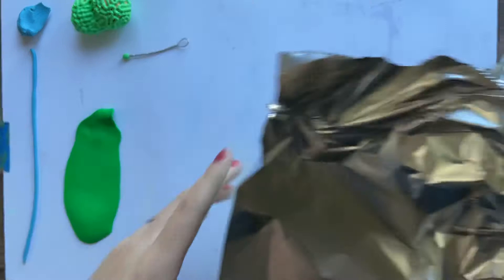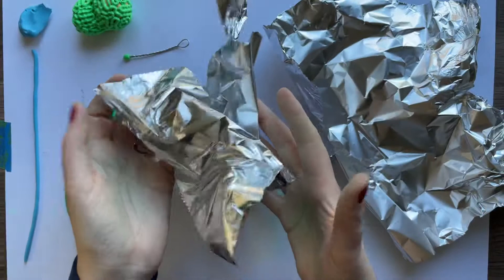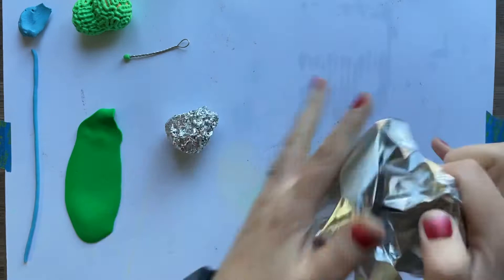The first thing you want to do is start with your armature. You just need a couple pieces of tinfoil. You're going to crumple them up into kind of two half brain shapes.